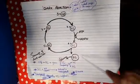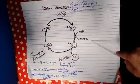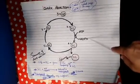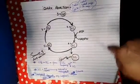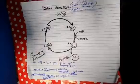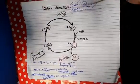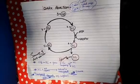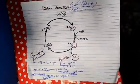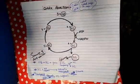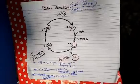In the dark reaction, food is formed by utilization of ATP and NADPH that are produced during light reaction. This cycle was discovered by a scientist named Calvin, who was working with his colleagues at the University of California. He was awarded the Nobel Prize in 1961 for this important discovery.